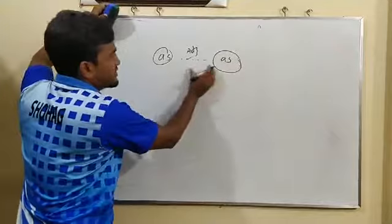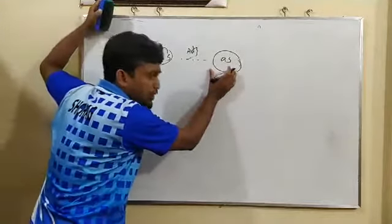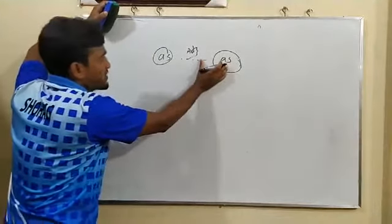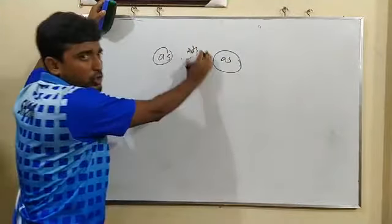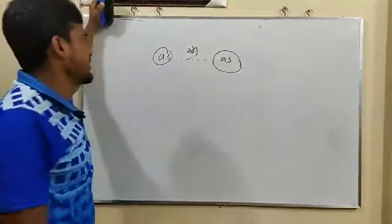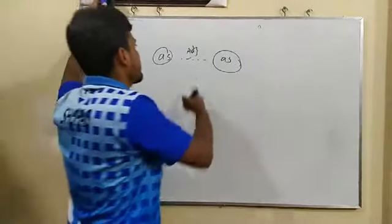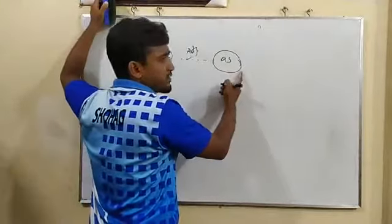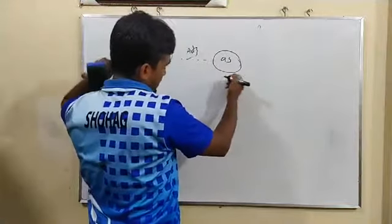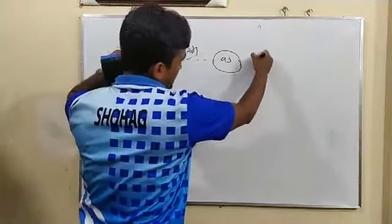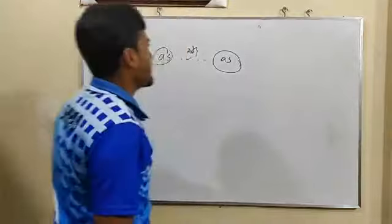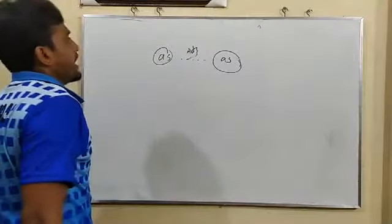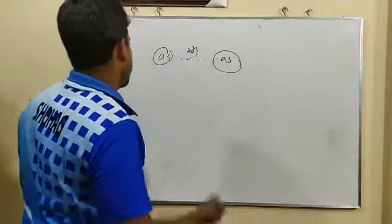We know well that there are three types of degrees: positive, comparative, and superlative. When you find 'as...as,' you will try to apply the positive adjective inside the structure.